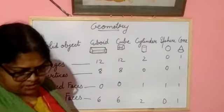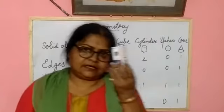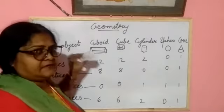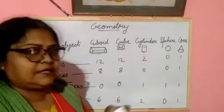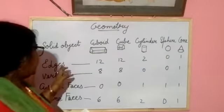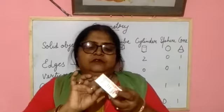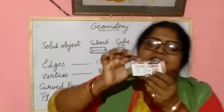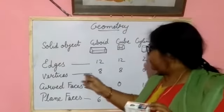The first solid object is a cuboid. You can see this is a cuboid. When you trace this one, you will get a plane figure. In a cuboid, there are 12 edges: 1, 2, 3, 4, 5, 6, 7, 8, 9, 10, 11, 12 — yes, 12 edges.